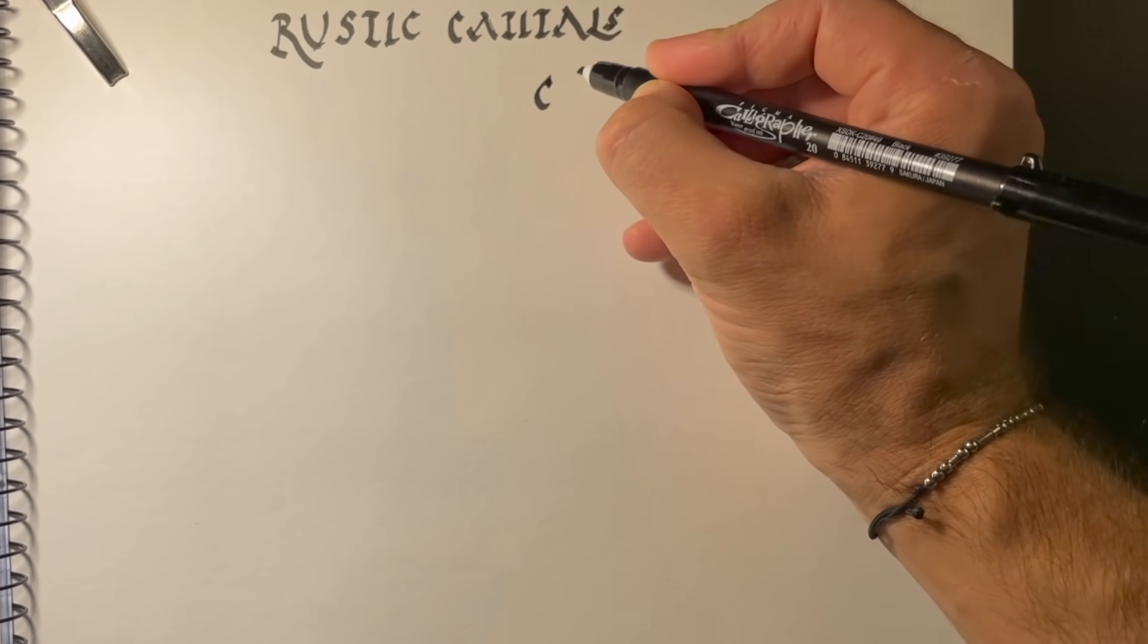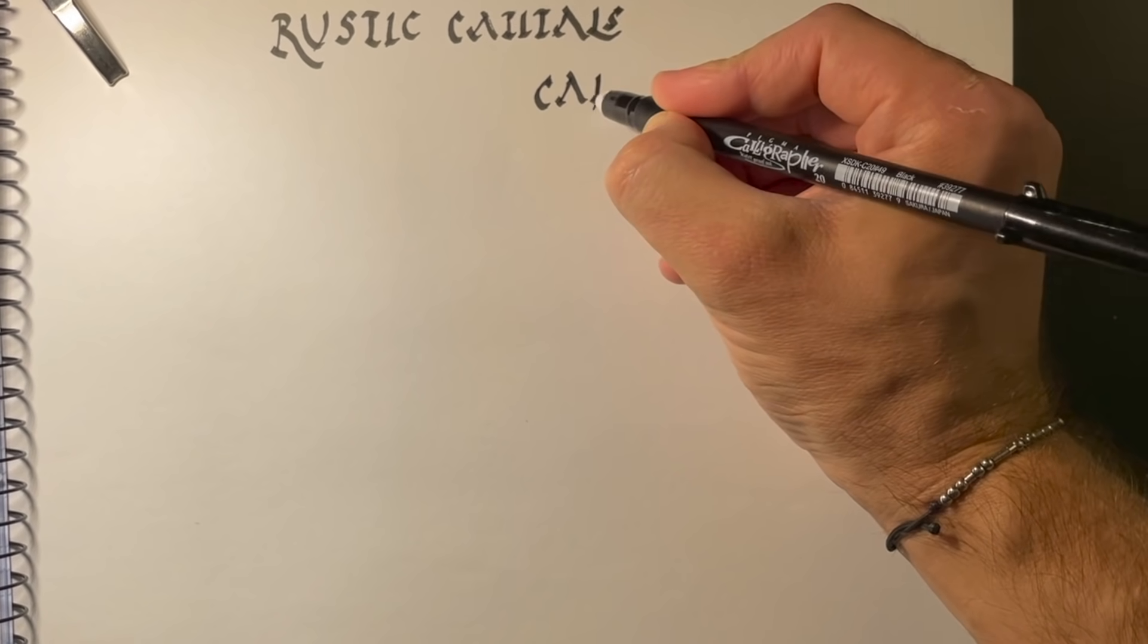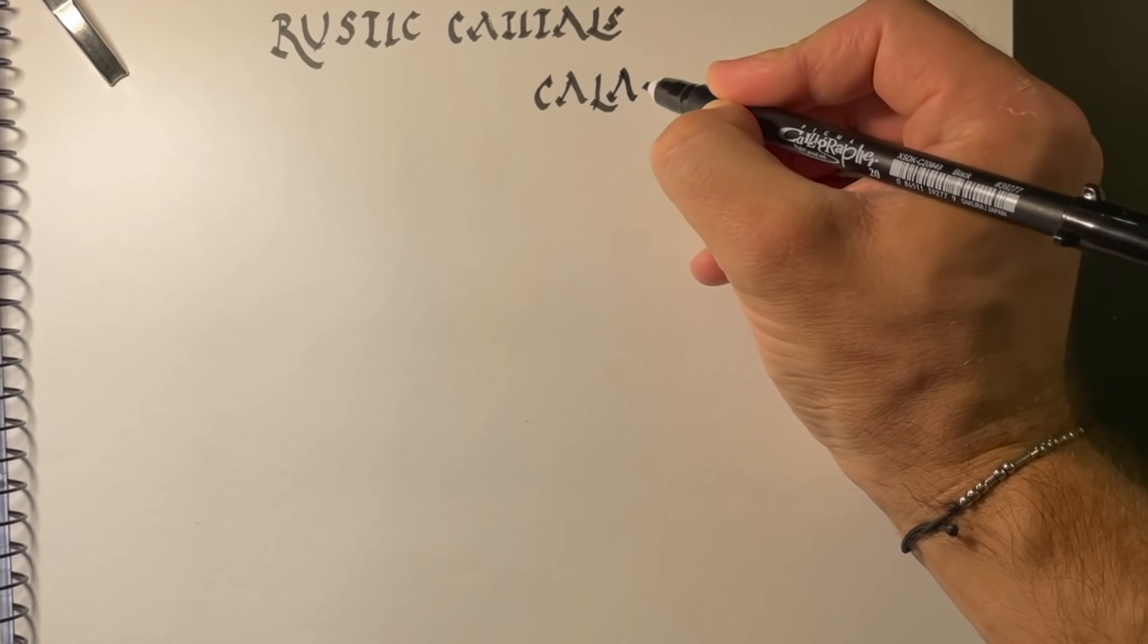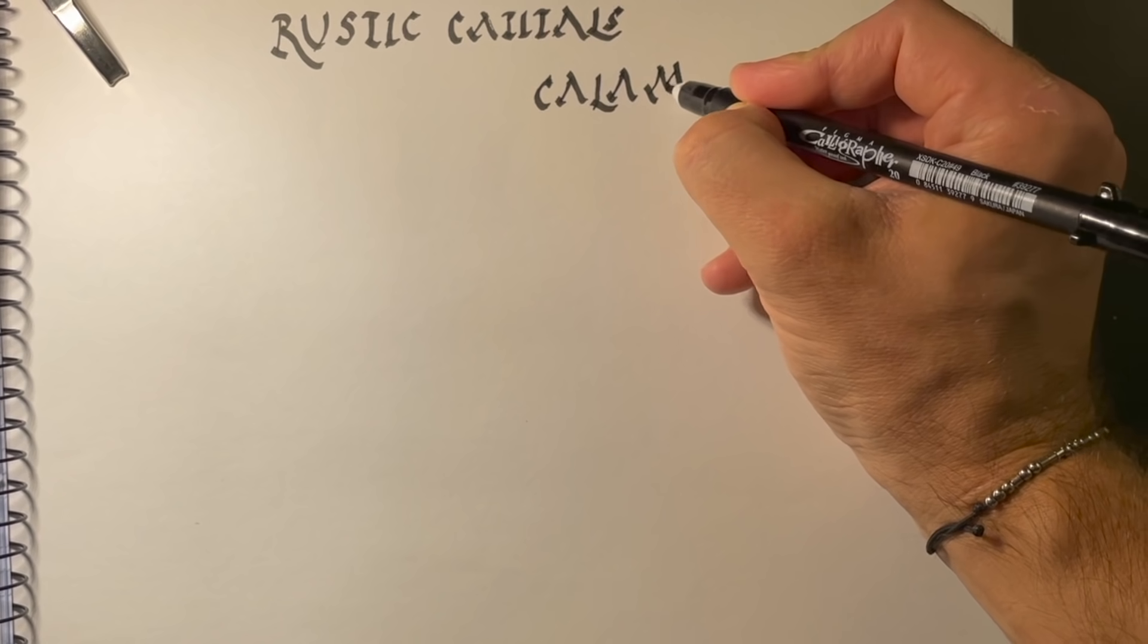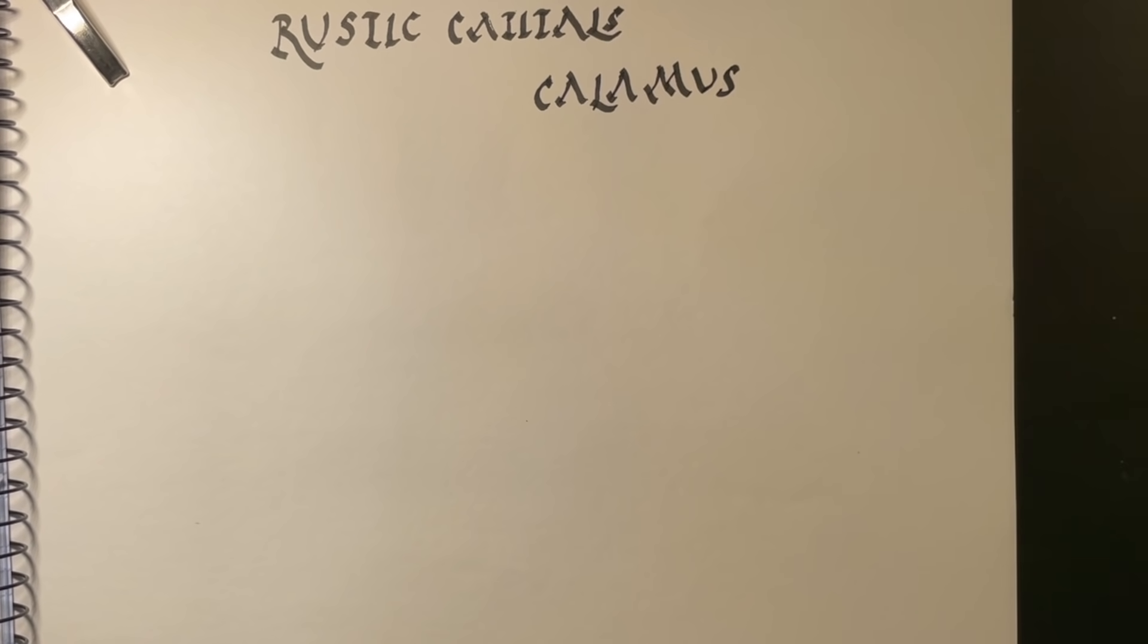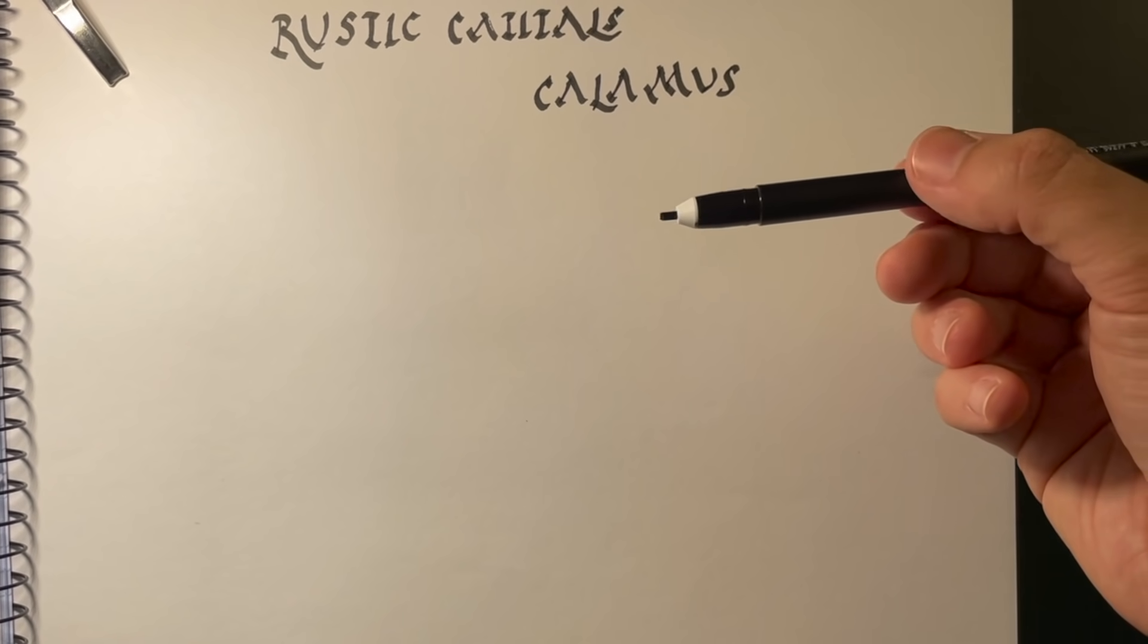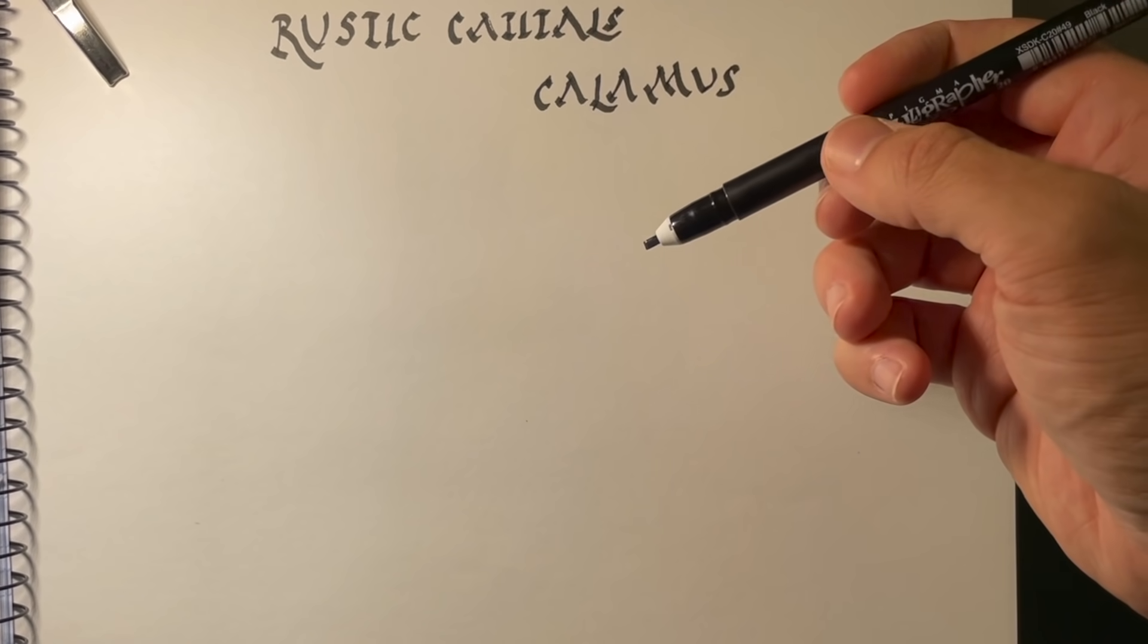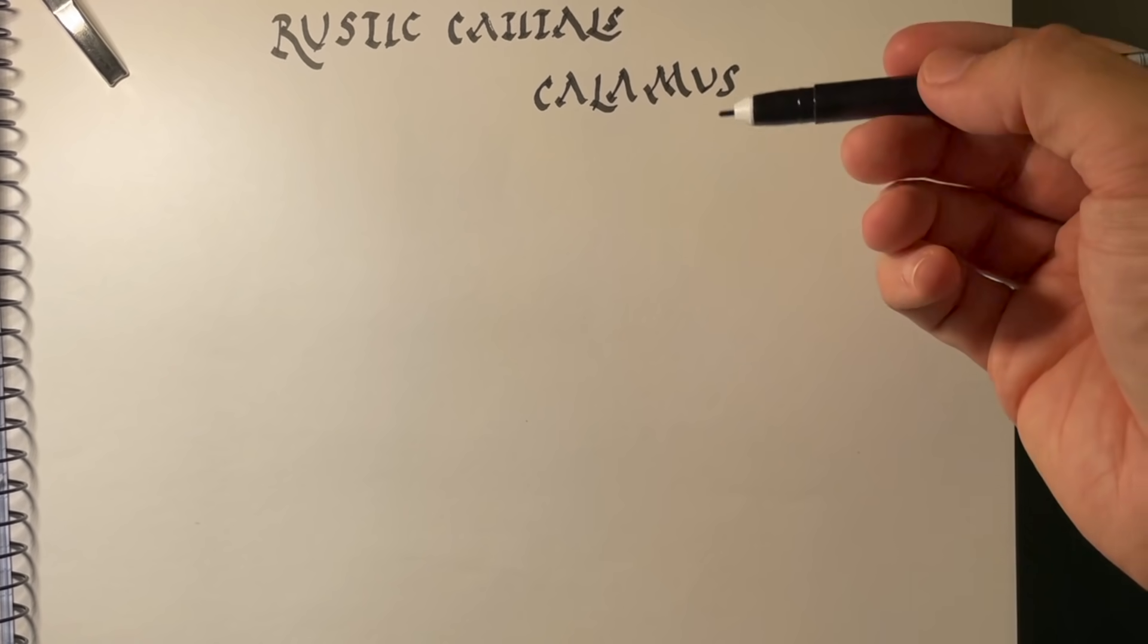And the rustic capitals, I mean. So, there's the... This should be longer. Calamus. Greek word for a cylindrical thing which has ink in it.